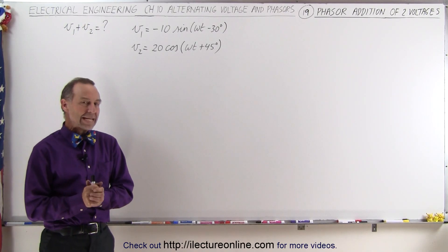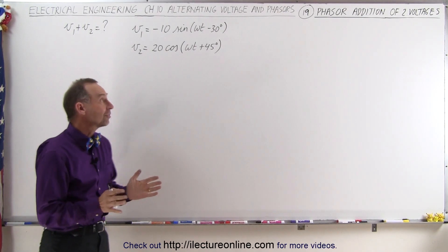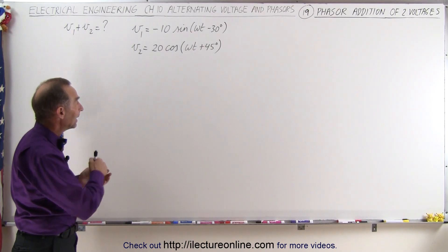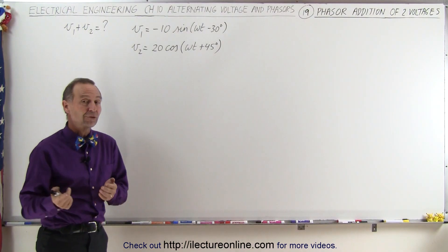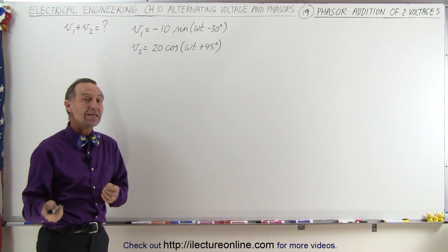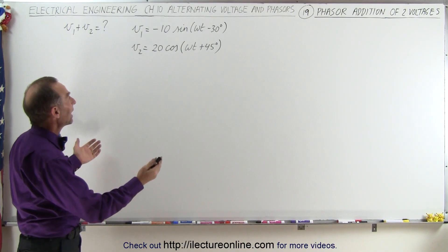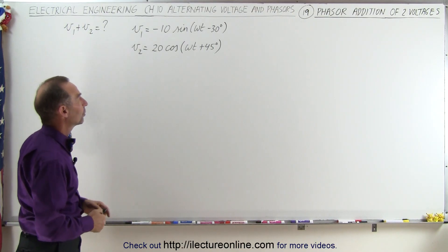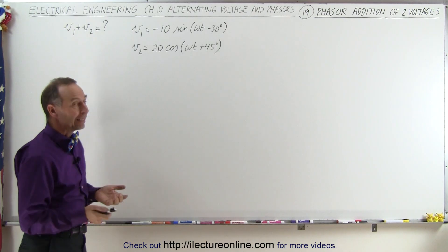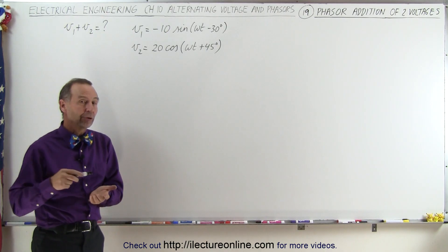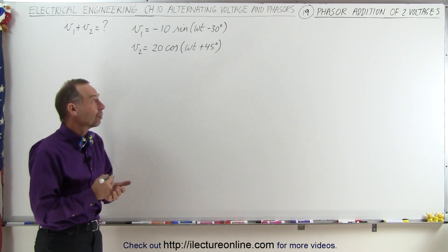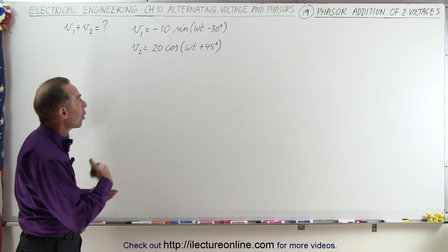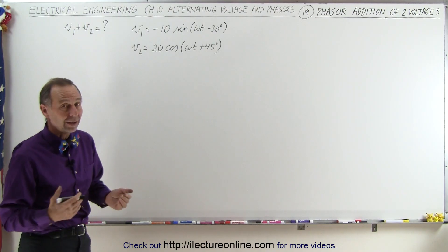Welcome to ElectronLine. Here's a really good example of how you take two voltages in the time domain and first convert them to the phasor domain before we add the two together, because it would be a lot more difficult to do it directly. If we're going to convert from the time domain to the phasor domain, we should write both voltages in terms of cosines — that makes it a lot easier.